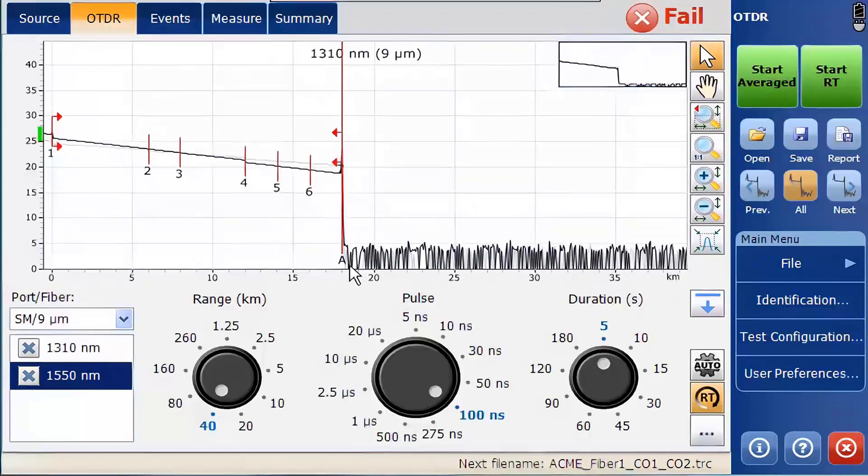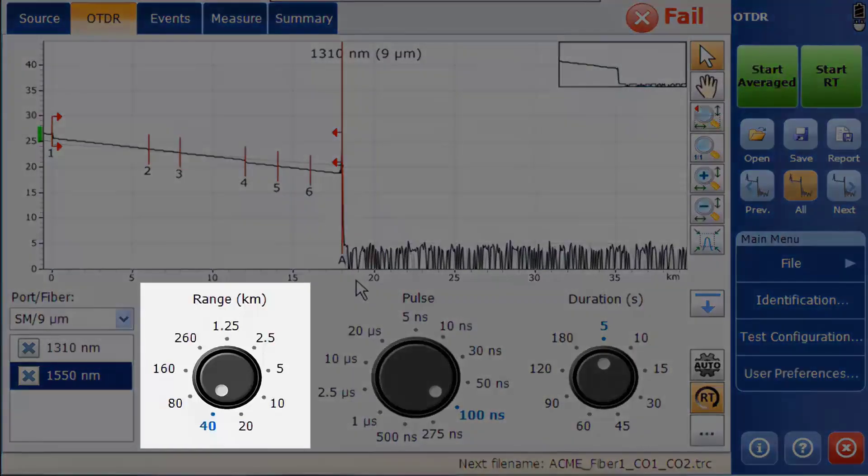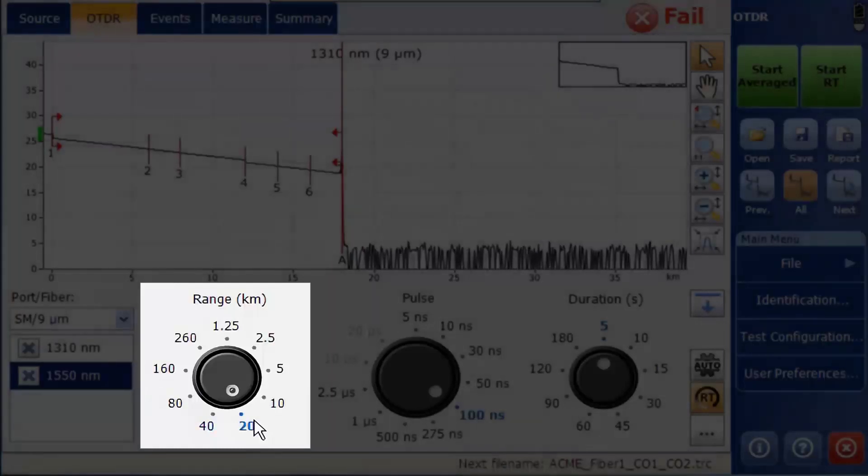It is recommended to have the OTDR trace be as large as possible but still have the end of fiber visible in the field. In the case of this test, the auto mode has set the range at 40 kilometers, but using a range of 20 kilometers would still allow you to see the entire fiber and the end of fiber with less unused space.